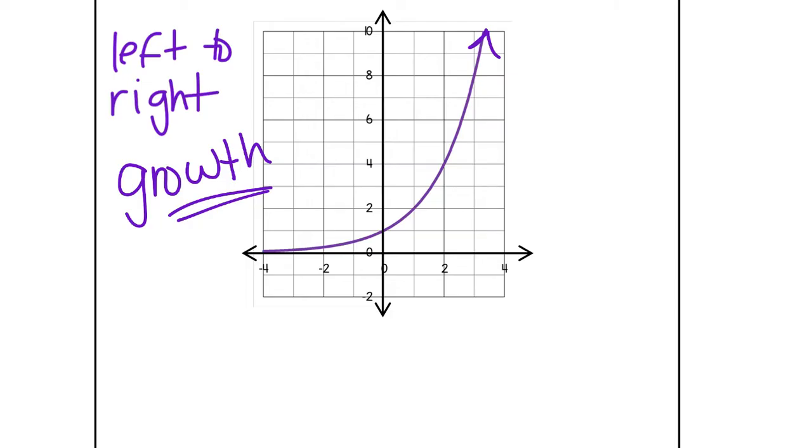But the other key feature that we talked about was y-intercept. So let's go ahead and write that down as well. Where is the y-intercept on this graph? So if this is the x-axis, y-axis, our y-intercept is right here. So it's at 1, but we always like to write this as a point. So 0 comma 1.